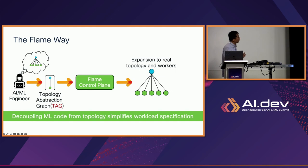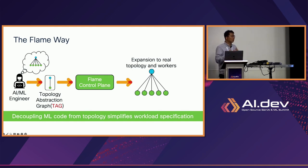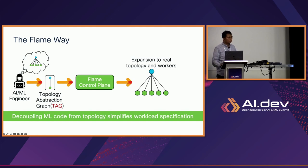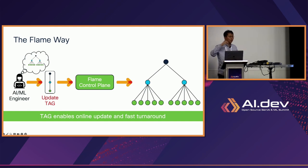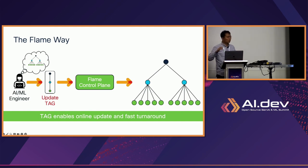FLAME wants to decouple the ML code from the topology, or the topology description, in order to simplify workload specification. Users need to think about what topology they want, which can be expressed as a topology function graph, which we call a TAG. Our control plane will take the TAG and expand it into the real topology and workers based on the specification. If a user wants to change their topology, they just need to update the TAG. This enables online updates and fast turnaround because the user doesn't need to develop custom new code at all.